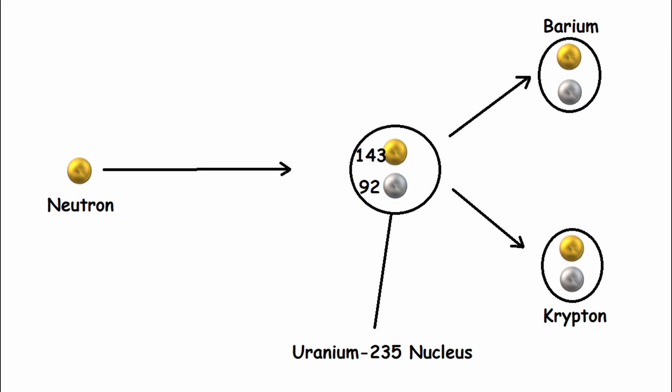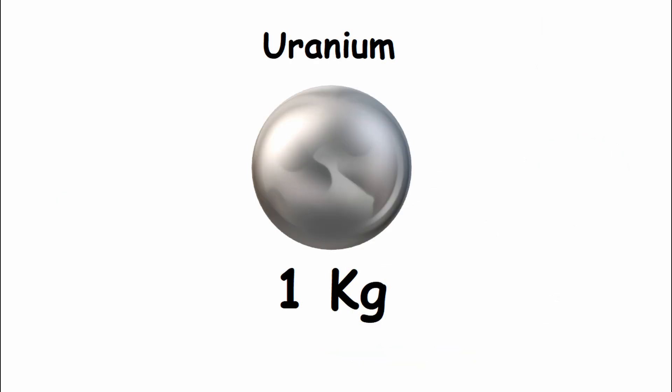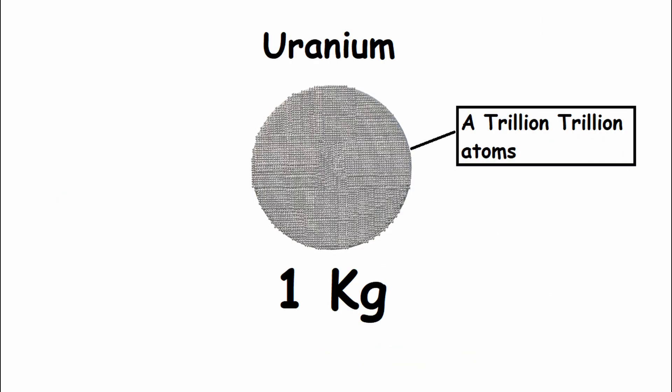Each time a nucleus of uranium-235 is split, a tiny amount of energy is released as a byproduct. But atoms are also tiny, and in a one kilogram mass of uranium, there are about a trillion trillion atoms, so the energy adds up.